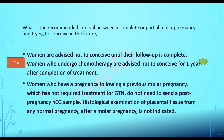What is the recommended interval between molar pregnancy and trying to conceive? Women are advised not to conceive until their HCG follow-up is complete, because pregnancy produces HCG and would interfere with monitoring. If the patient has received any form of chemotherapy — EMACO or methotrexate — they are advised not to conceive for one year after completion of treatment. Women who have a pregnancy following a previous molar pregnancy which did not require GTN treatment do not need to send a post-pregnancy HCG sample, and histological examination of placental tissue from any subsequent normal pregnancy is not indicated.